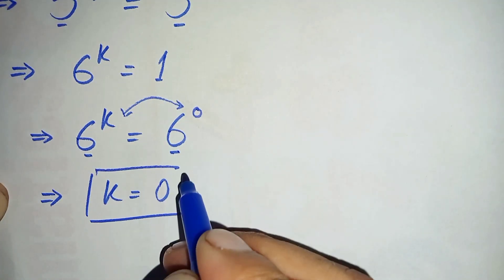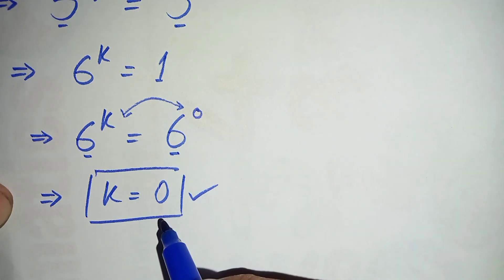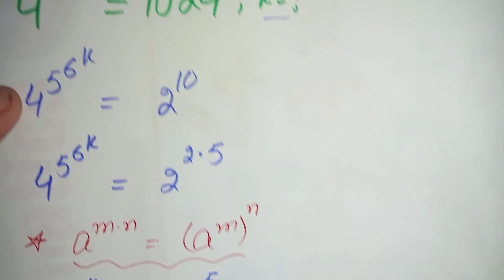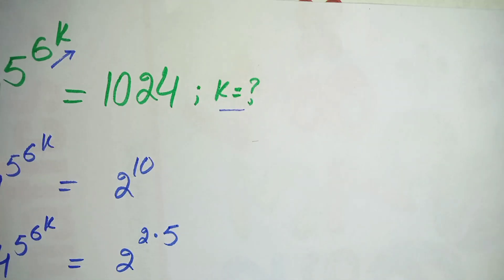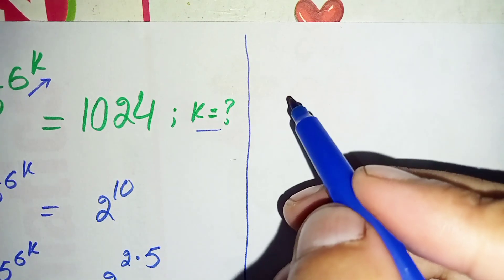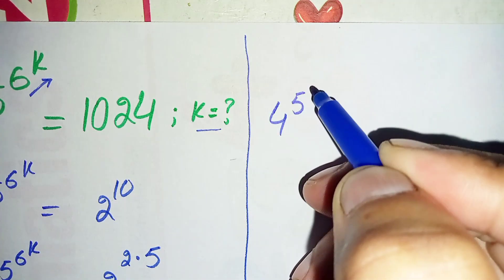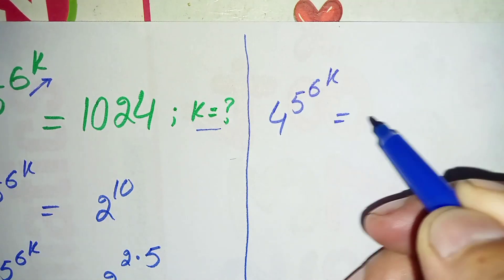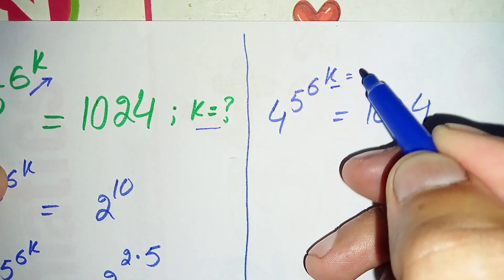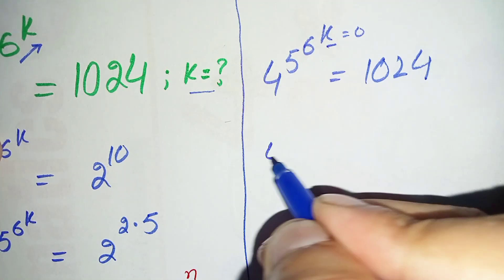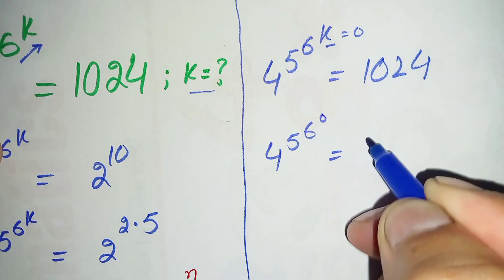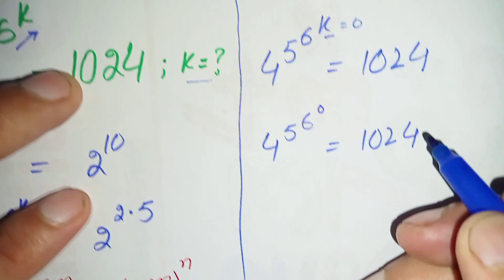So k equals 0 is one possible solution of the above exponential equation. Now we will try to verify that k equals 0 is the exact and correct value of k. To verify, we rewrite the problem: 4 raised to power 5 raised to power 6 raised to power k equals 1024, and replace k with 0. This gives 4 raised to power 5 raised to power 6 raised to power 0 equals 1024.